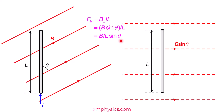Let's do a quick check. If it's BIL sine theta, then when theta is zero degrees, the magnetic force should be zero. When the angle theta is zero, the magnetic field ends up being parallel to the conductor, so the magnetic force will be zero. So yes, it's correct — it's BIL sine theta.